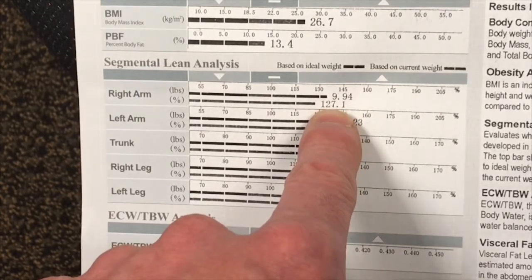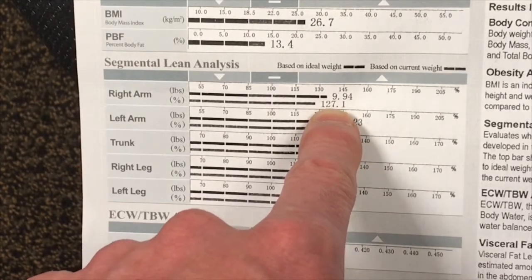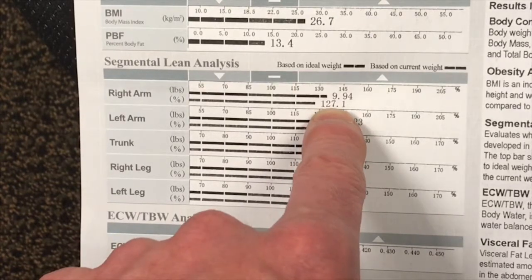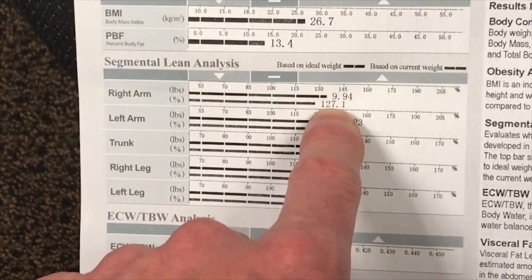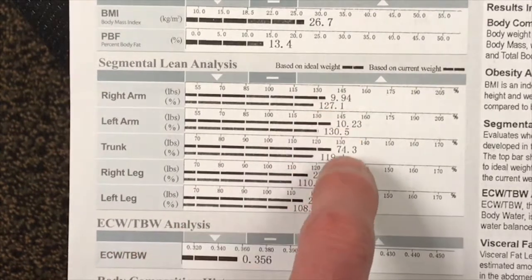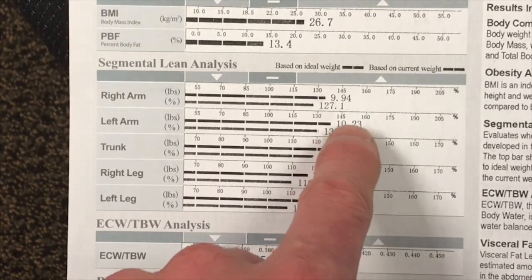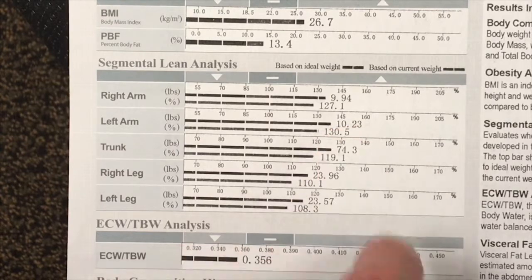So this person, for other people who weigh the same amount, the same height, same gender, is 27.1% higher in right arm lean mass and 30.5% higher in the left arm, yet they have 10.23 pounds of lean mass in their left arm.